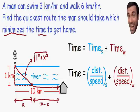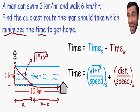Now we're ready to rewrite our equation in terms of one variable x. I'll replace the swimming distance with the square root of one plus x squared, and replace the swimming speed with 3, because the man can swim at 3 kilometers per hour. This information is given to us in the problem.